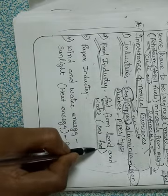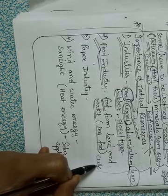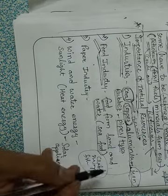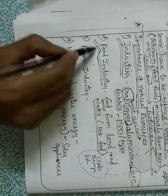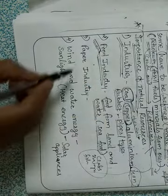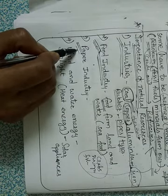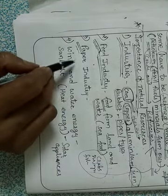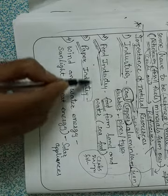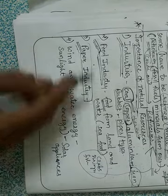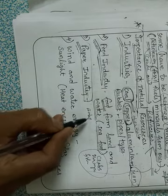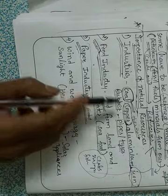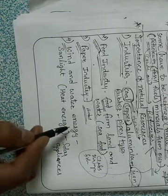We also eat seafood obtained from water — different types of animals like crabs, shrimps, and various kinds of fish. So the food industry also runs on natural resources. The paper industry is another example: most paper comes from forest wood. Many forests are cut to make paper, and the paper industry is very large since paper is used for books, copies, files, and many other purposes.